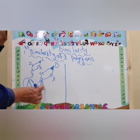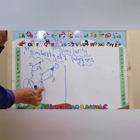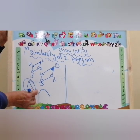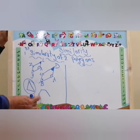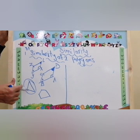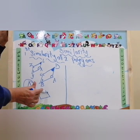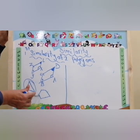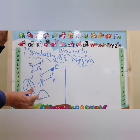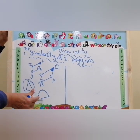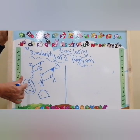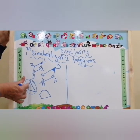And if we draw this figure, how many sides? 1, 2, 3, 4, 5. What is the name of this? It's a pentagon. The pentagon is a polygon and the triangle is a polygon.